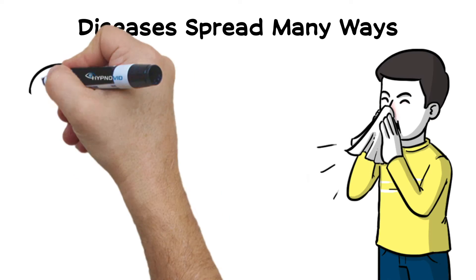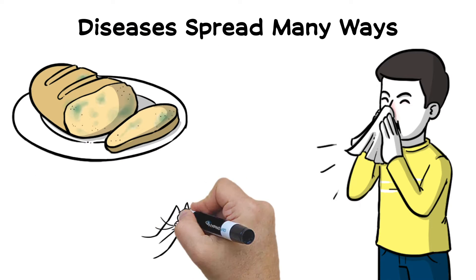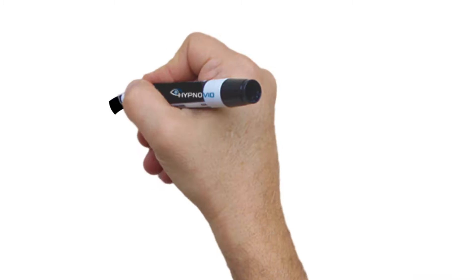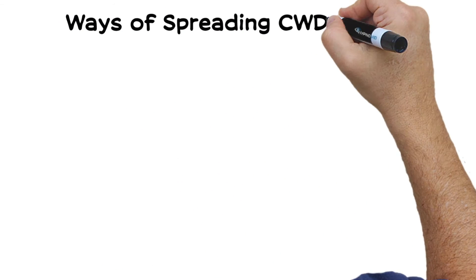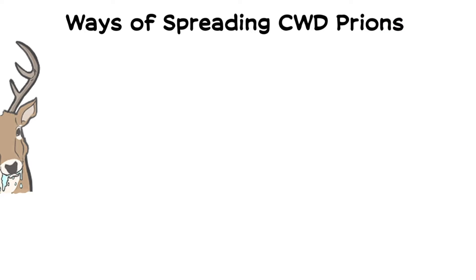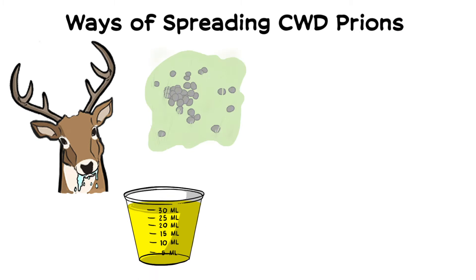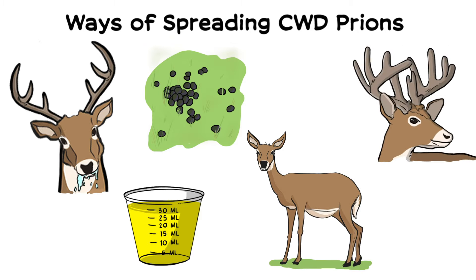There are many ways that diseases can spread. We still have a lot to learn about how CWD spreads, but we know some methods. Infected animals shed prions, the cause of CWD, in several ways such as in saliva, urine, feces, semen, and antler velvet.